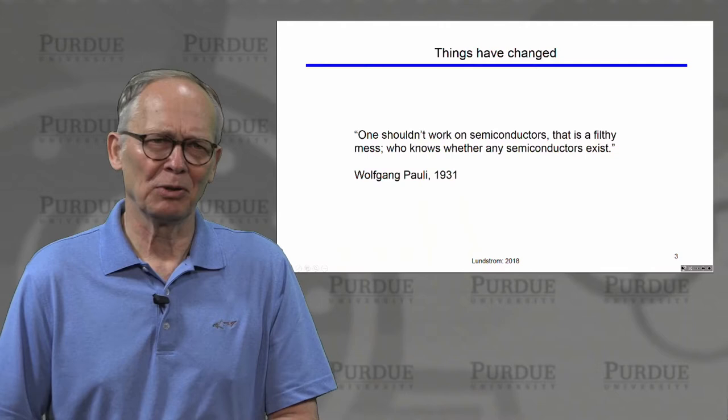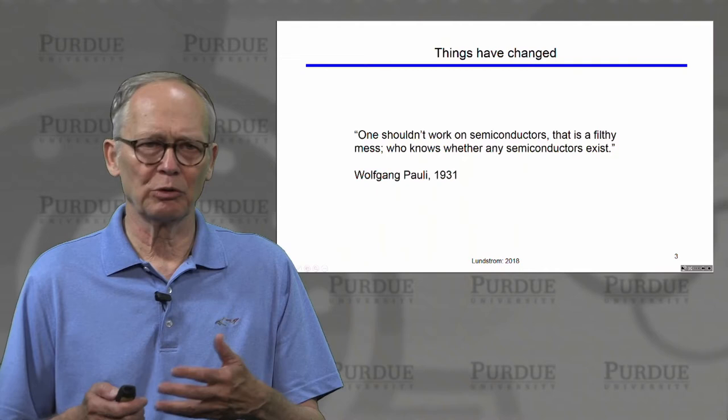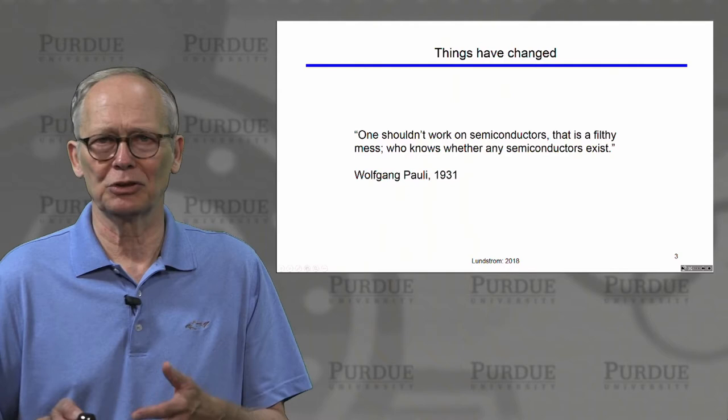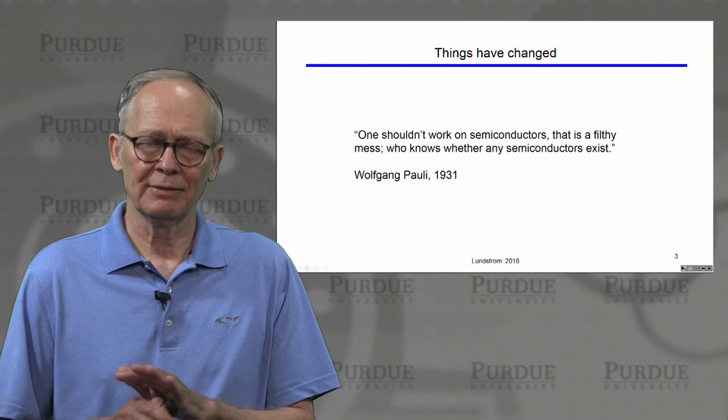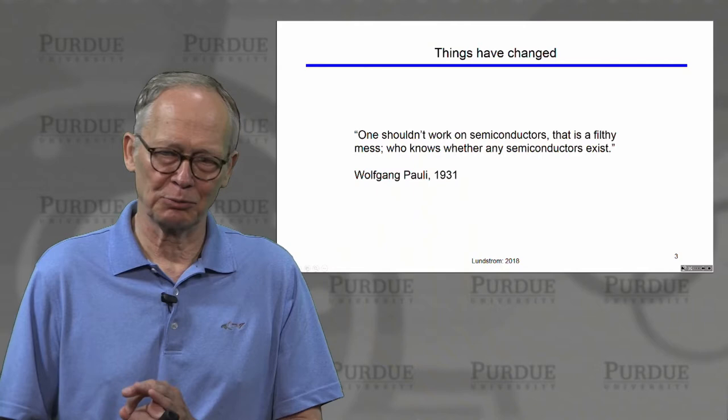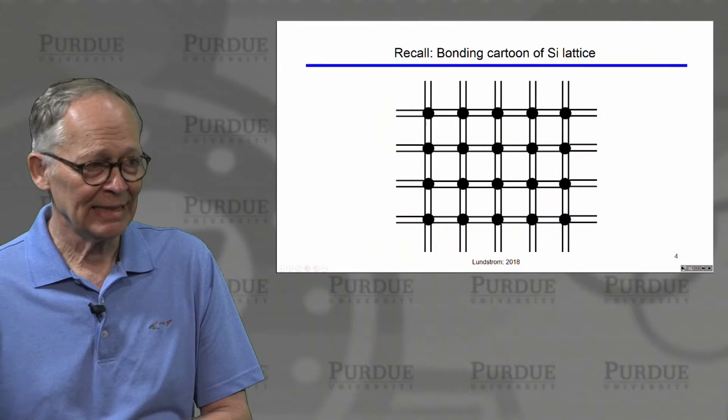Early on, people avoided semiconductors because early work was with materials that had unknown concentrations of defects in them, producing all kinds of effects that made it very difficult to understand what was going on and very difficult to reproduce any experiment. Things have changed, and we are now able to grow very high purity silicon and reproducibly introduce dopants or defects that we intentionally put in to change the electronic properties in specific ways. That's how we make devices.